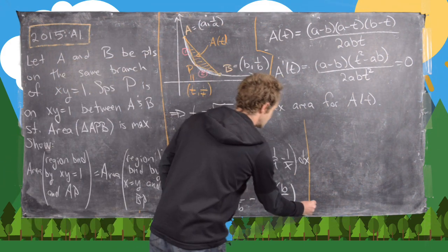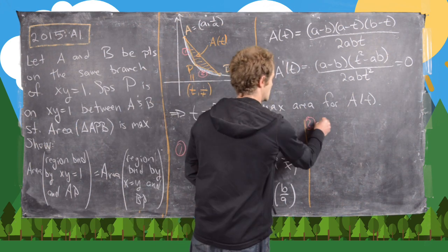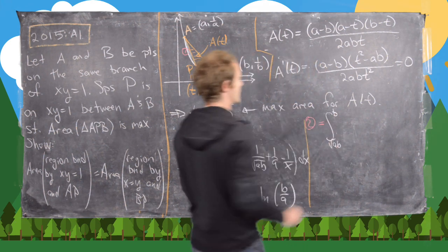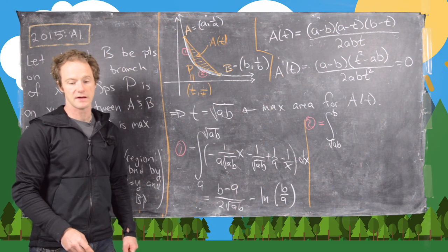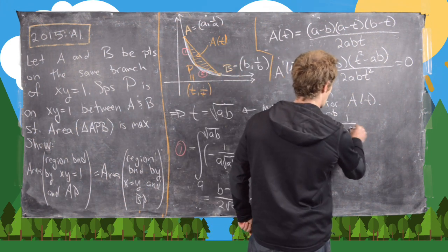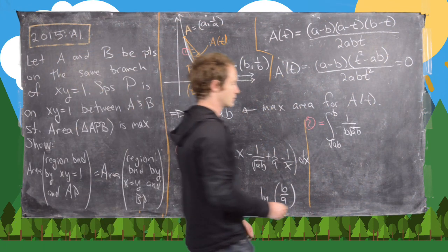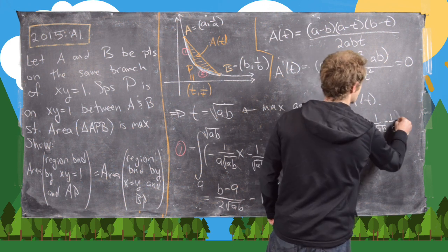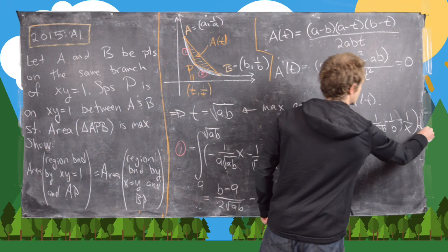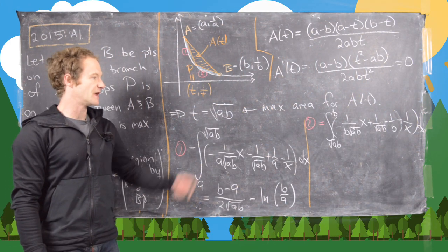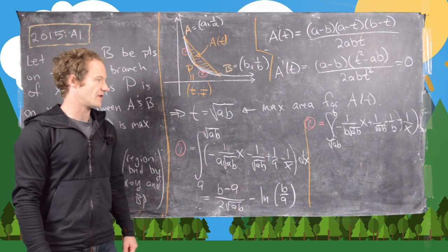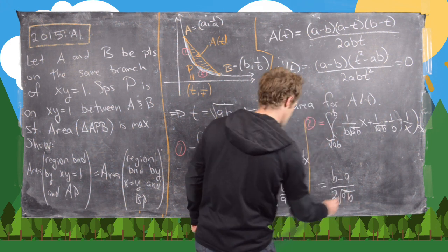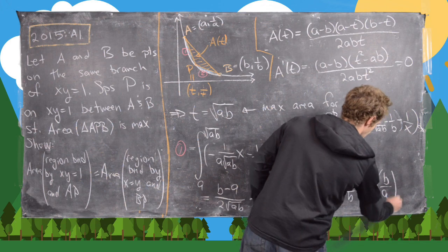For Area 2, we compute the integral from √(AB) to B. With T = √(AB), the line BP has equation −(1/(B√(AB)))x + 1/√(AB) − 1/B, and we subtract 1/x. Performing this definite integral and all the necessary algebraic manipulation, we end up with the same value: (B − A)/(2√(AB)) minus the natural log of B/A. So the two areas are equal, which is what we wanted to show.